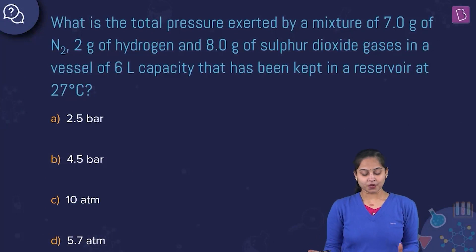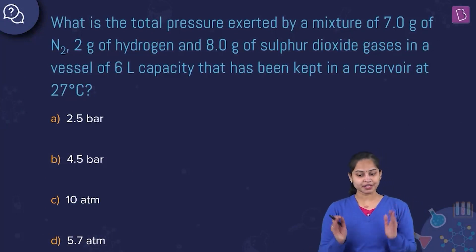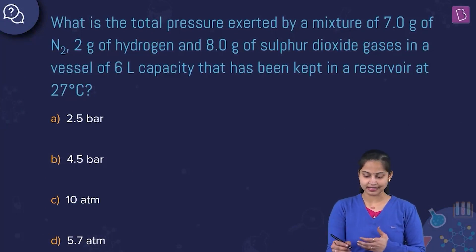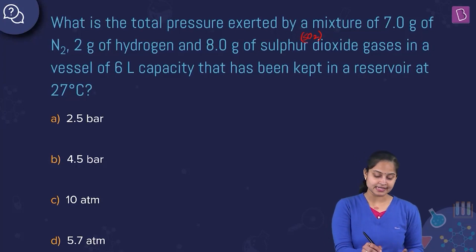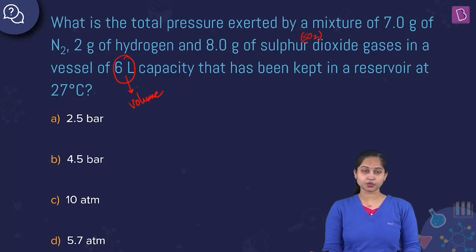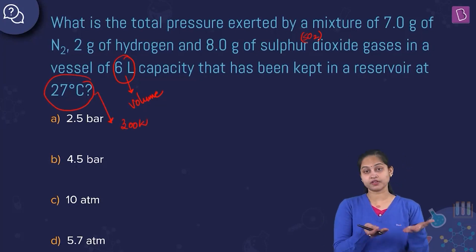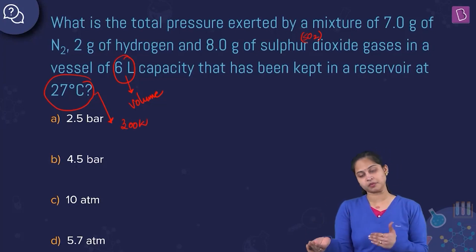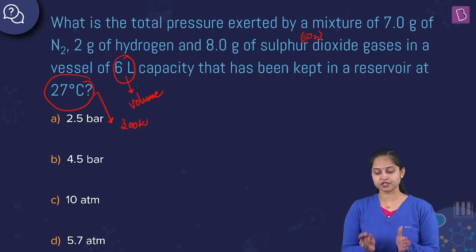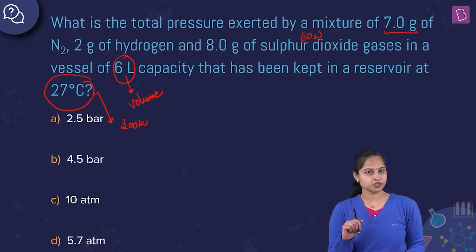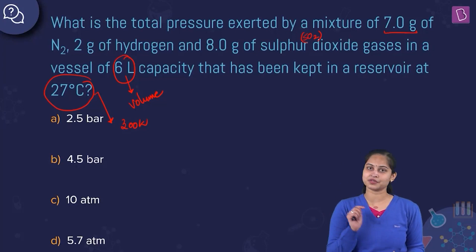The next question: what is the total pressure exerted by a mixture of 7 grams of nitrogen, 2 grams of hydrogen, and 8 grams of sulfur dioxide gases in a vessel of 6 liters capacity kept at 27 degrees Celsius? 27 degrees Celsius means 300 Kelvin, since adding 273 to 27 gives 300 Kelvin. First, we'll calculate the number of moles of nitrogen, hydrogen, and sulfur dioxide.